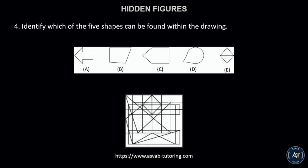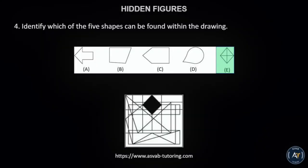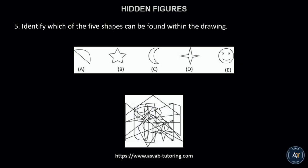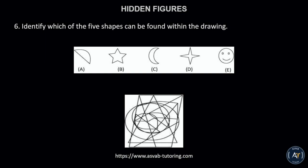Number 4. Identify which of the 5 shapes can be found within the drawing. The correct answer is letter E. Number 5. Identify which of the five shapes can be found within the drawing. The correct answer is letter D. Number 6. Identify which of the five shapes can be found within the drawing. The correct answer is letter A.